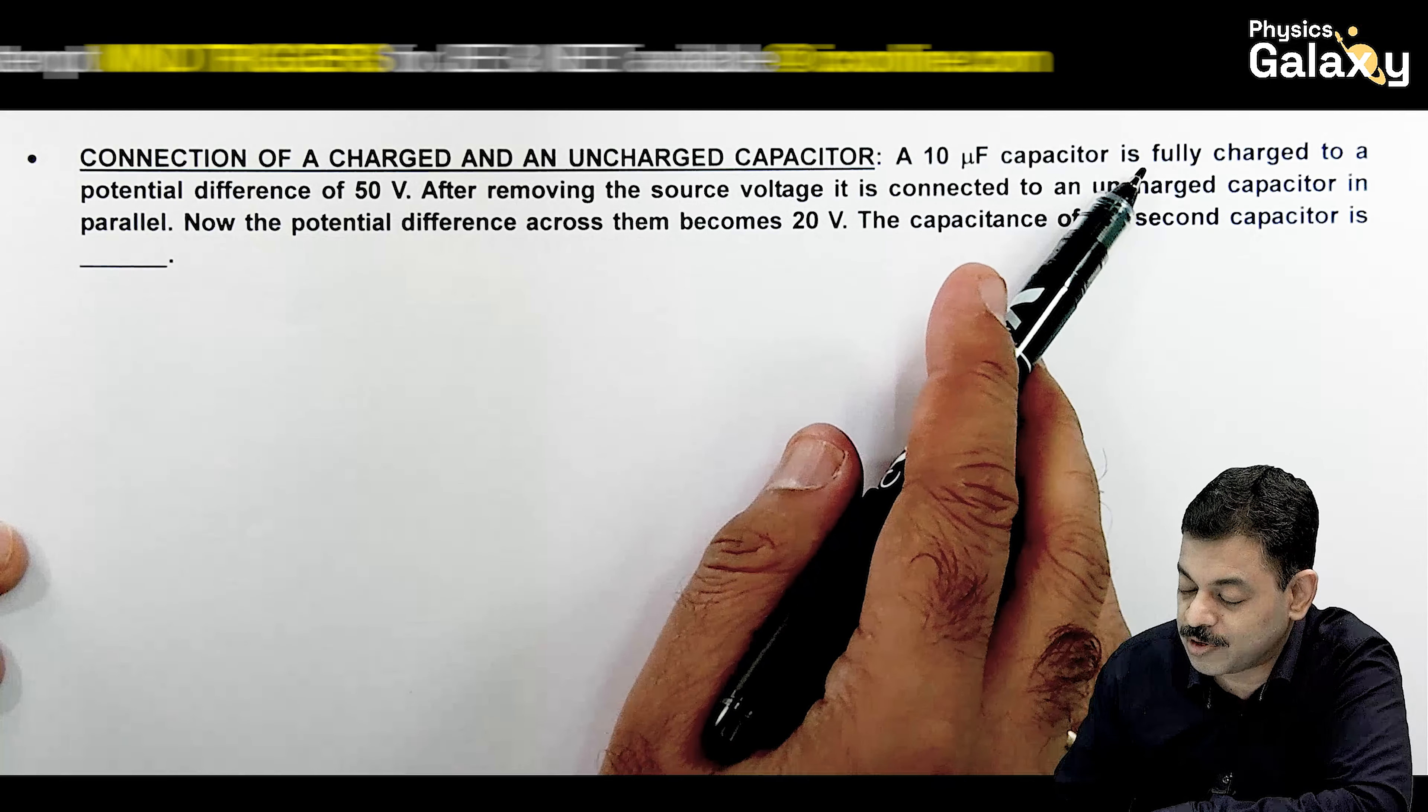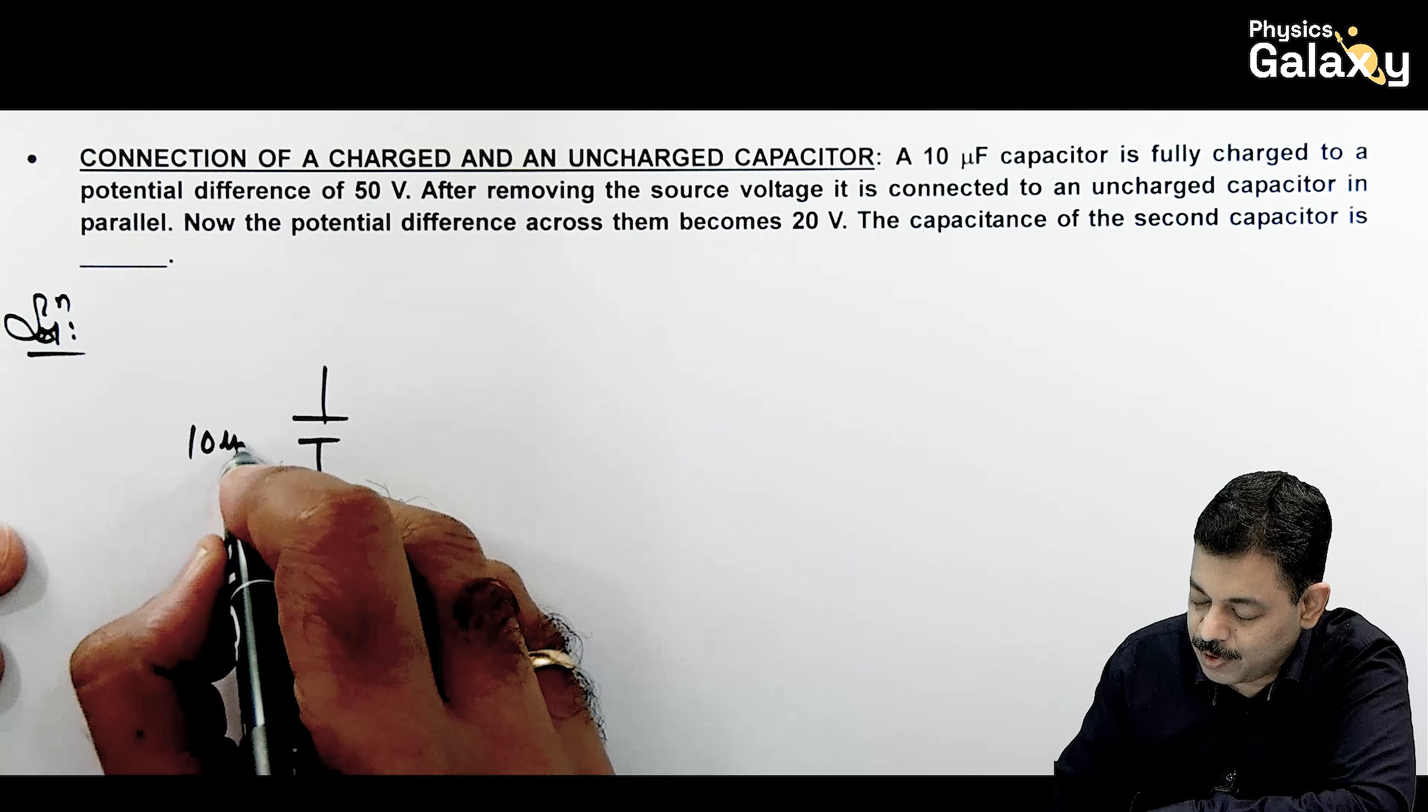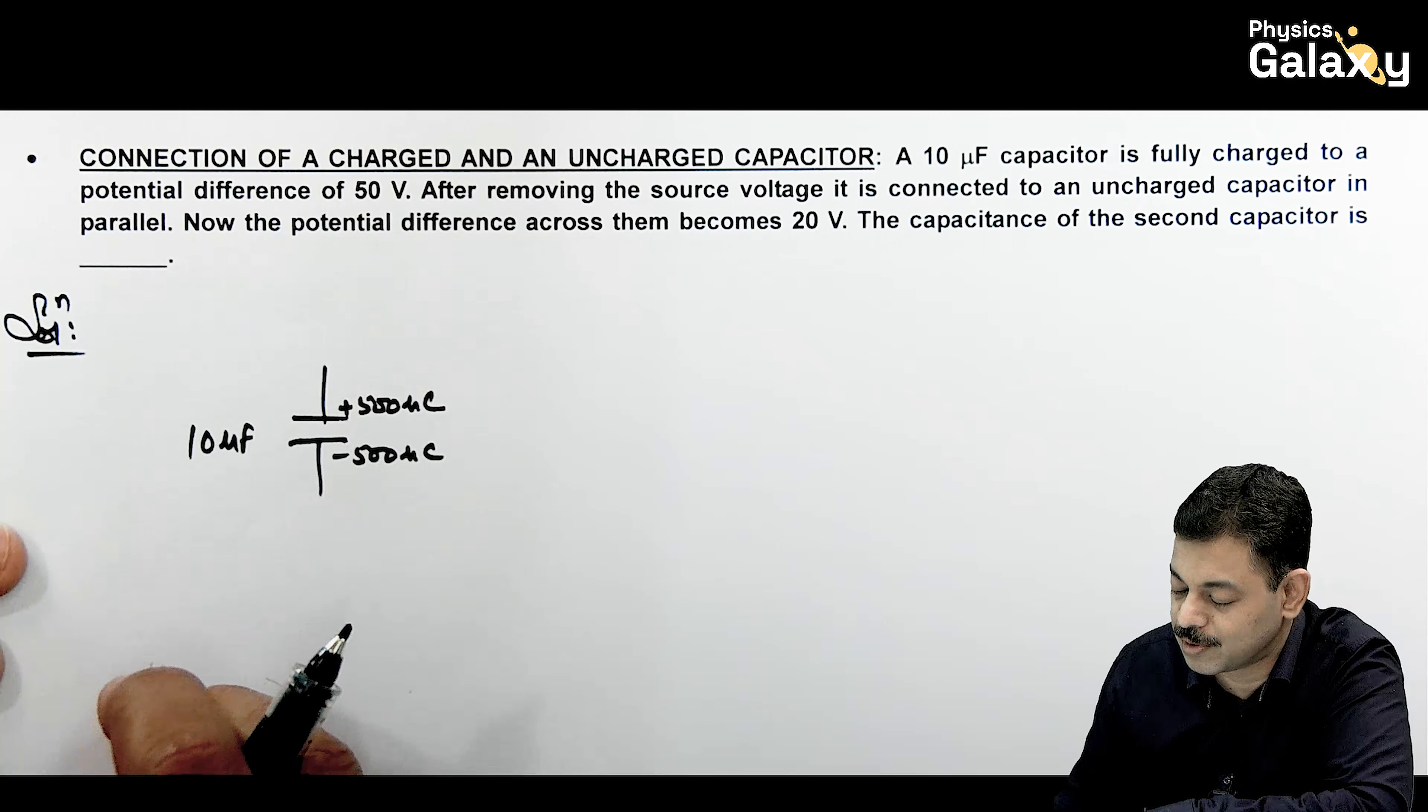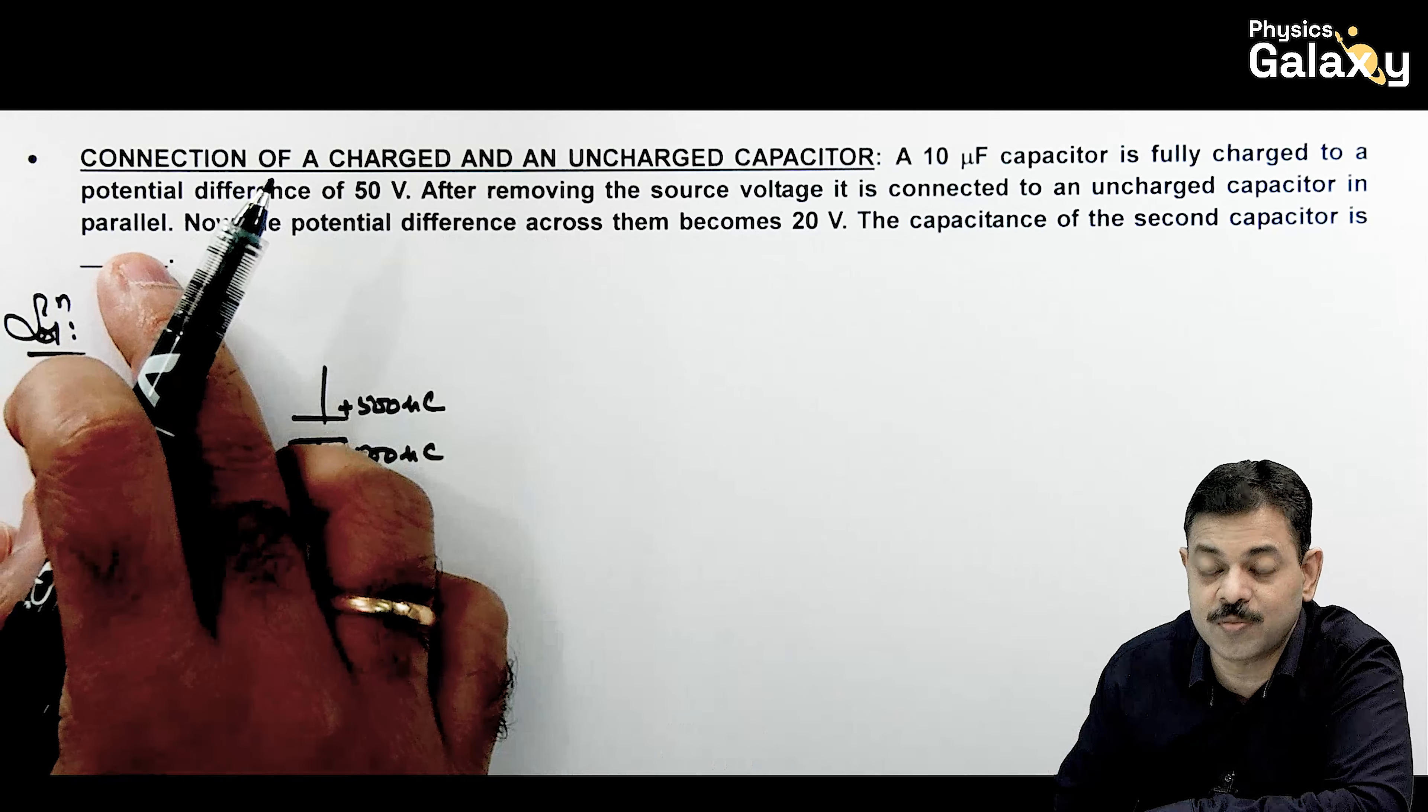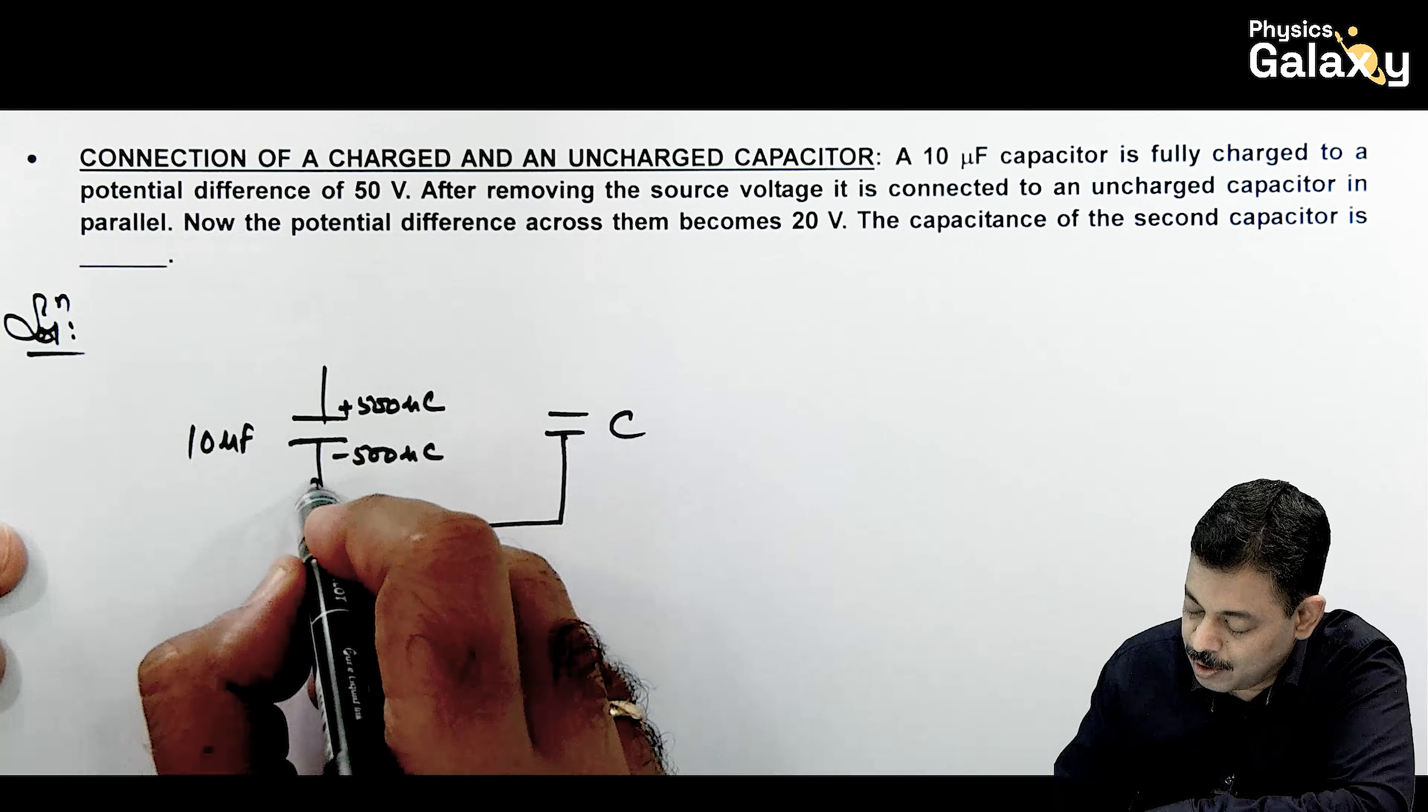A 10μF capacitor is fully charged to a potential difference of 50V. So when you have a 10μF capacitor charged on 50V, then it will charge 500μC and -500μC. These are the charges on this capacitor. After removing the source voltage, voltage is charged constant. It is connected to an uncharged capacitor in parallel. And the potential difference across them becomes 20V. So what is the new capacitor? Let us consider this C. And this is parallel.